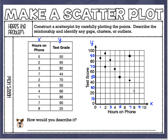Then we have 8 and 25 — go to 8 hours on the phone and then right between 20 and 30. I'm going to go through and make my points a little rounder and a little bigger. There we go — here's our scatterplot. Now we're going to describe it.